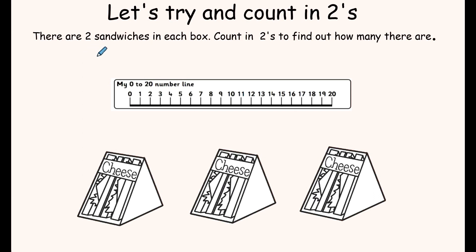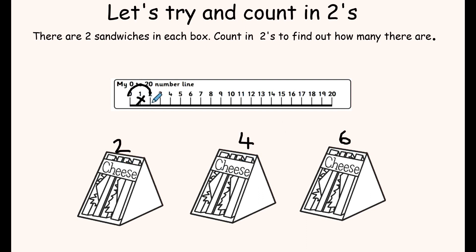Let's try and count in twos. There are two sandwiches in each box — count in twos to find out how many there are. So there's two, four, and six. I've counted in twos and made sure there is a number missing in between each jump. The number of jumps depends on how many twos I'm counting. Because I've got three boxes of sandwiches, I've done three jumps and land on number six — so I've got six sandwiches in total.